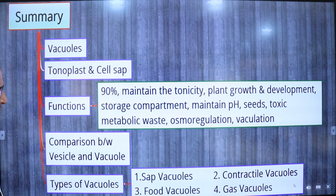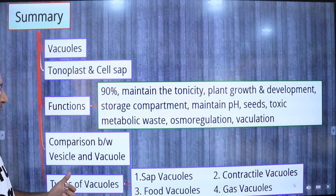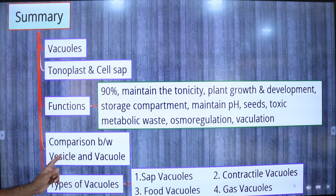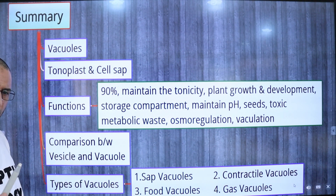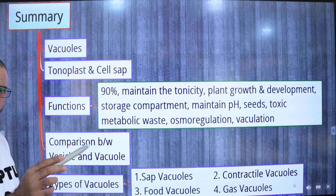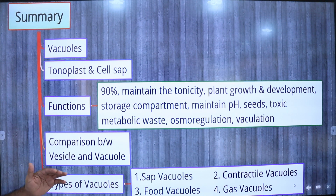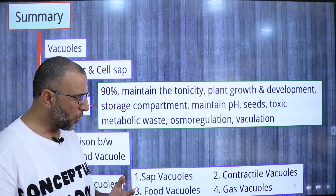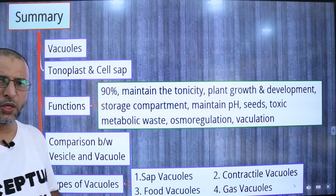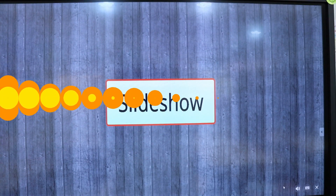Comparing vesicles and vacuoles: both are bounded by a single membrane and are storage in function. The difference is that vacuoles are comparatively larger in size than vesicles. The membrane of a vesicle fuses with the plasma membrane or other membrane systems within the cell, while the vacuole membrane does not fuse with the plasma membrane. The four types of vacuoles are sap vacuoles, contractile vacuoles, food vacuoles, and gas vacuoles.